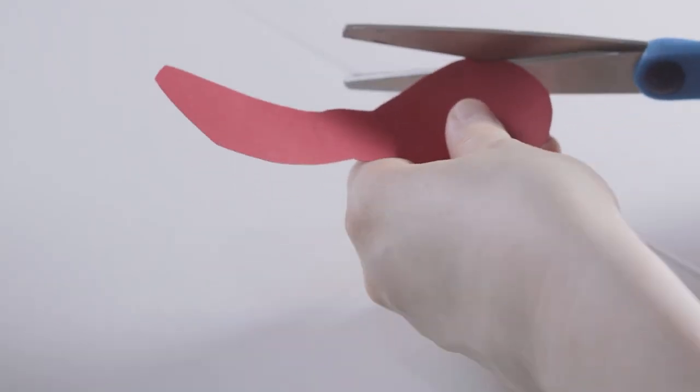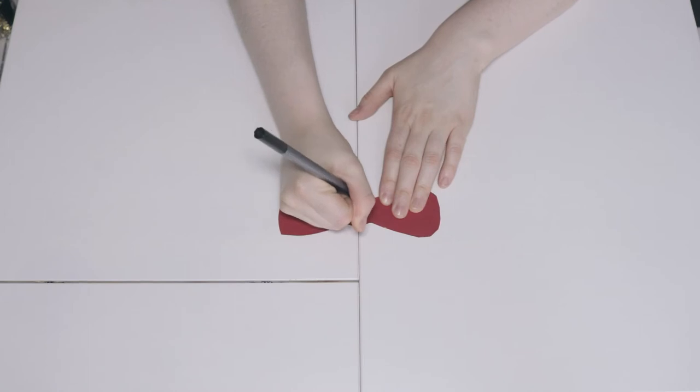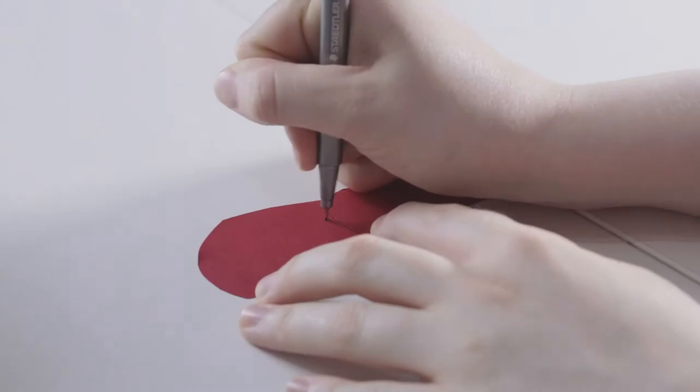Then draw some lines on the bowtie to mark the creases. You can also decorate with stickers, paint or glitter.